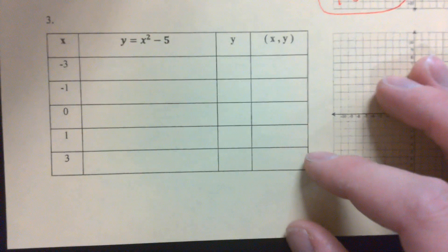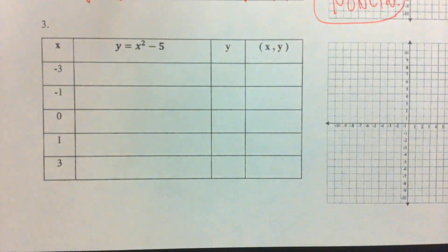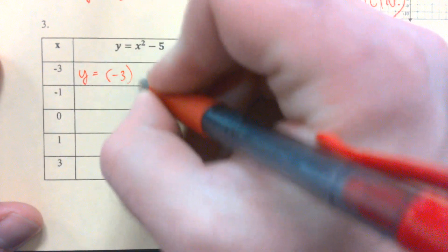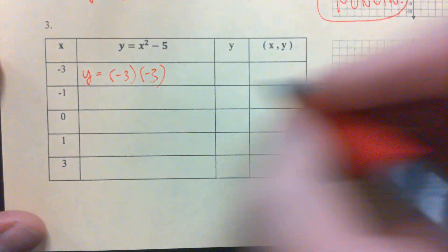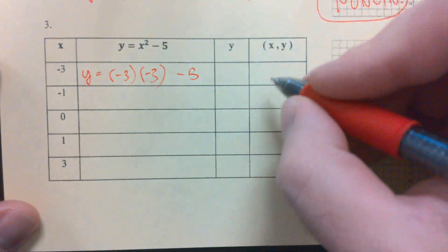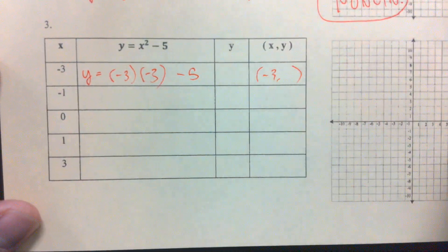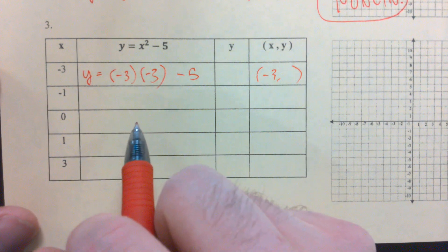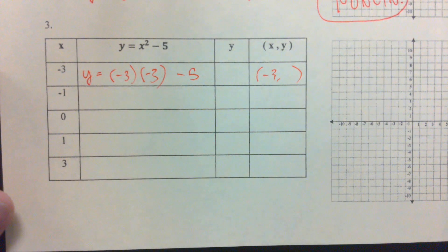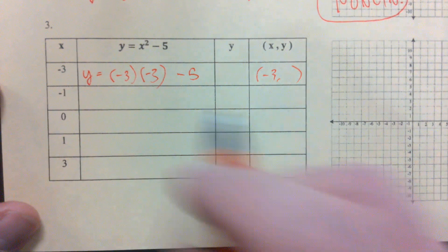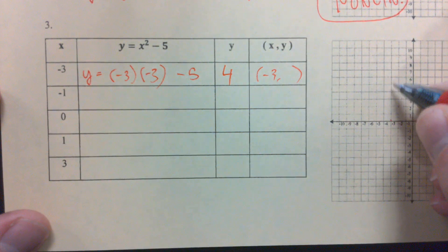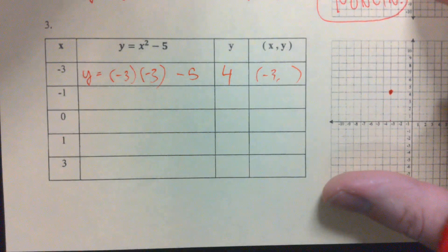If we take a look down at number 3, number 3 we've got x squared minus 5. So same process. We're going to plug in negative 3 and multiply it by itself. Then subtract 5. What is negative 3 times negative 3? Well, what's 3 times 3? 9. Minus 5 is 4. 9 minus 5 is 4. Negative 3. Up to 4. Boom. There's our first point.